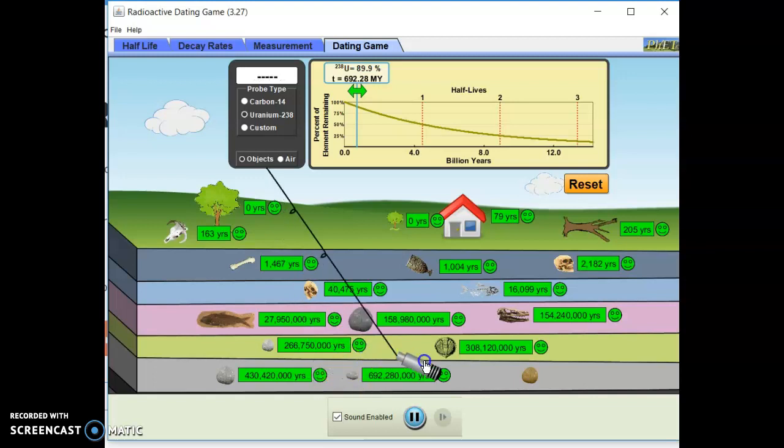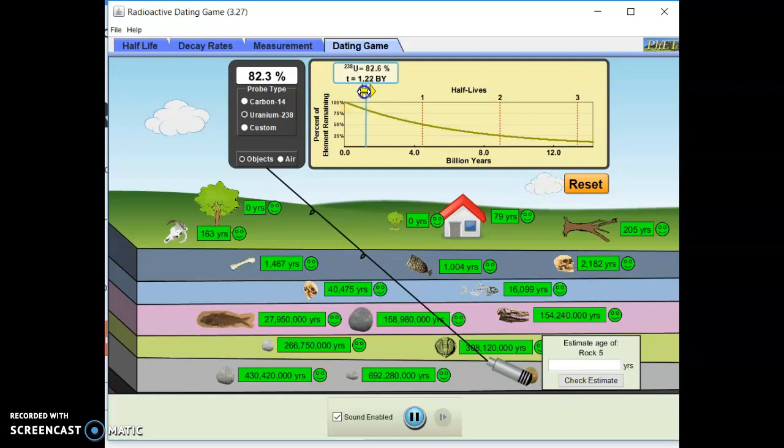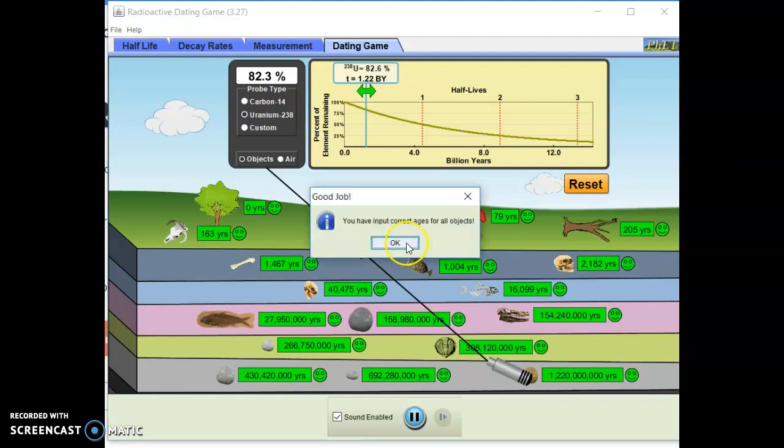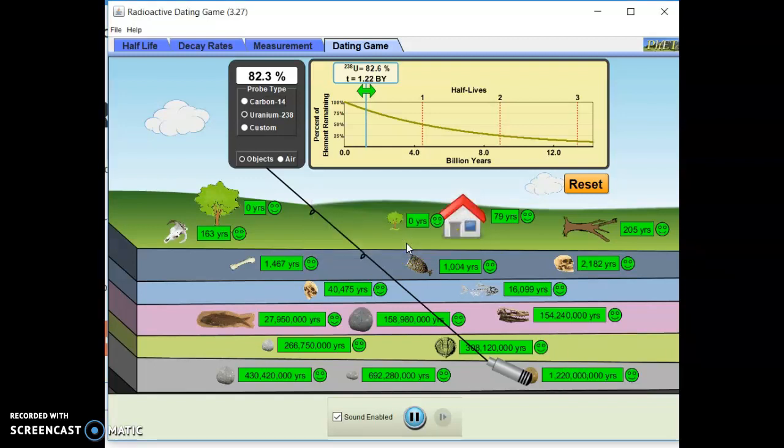Okay, last one here, uranium, 82.3. Okay, this one looks to be pretty old here. This is billion, 1,220,000,000. Okay, so take a look at that. Again, if you want to try it by yourself, you do not need to follow me, but this is just to kind of check your answers.